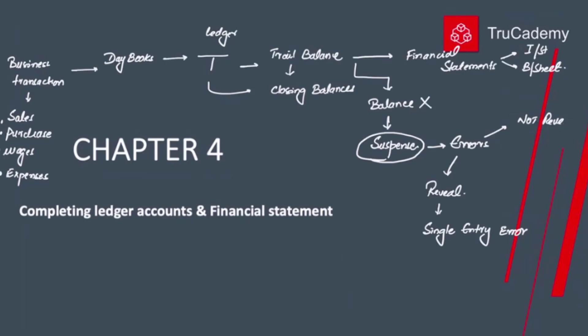There are many types of errors which are still considered errors, but even when those errors are present in our books, the trial balance will still get balanced. We will also be discussing those types of errors in this chapter. This completes the overview of the accounting cycle.